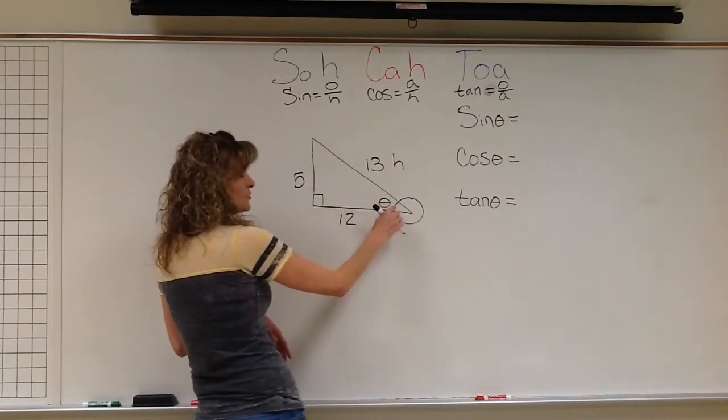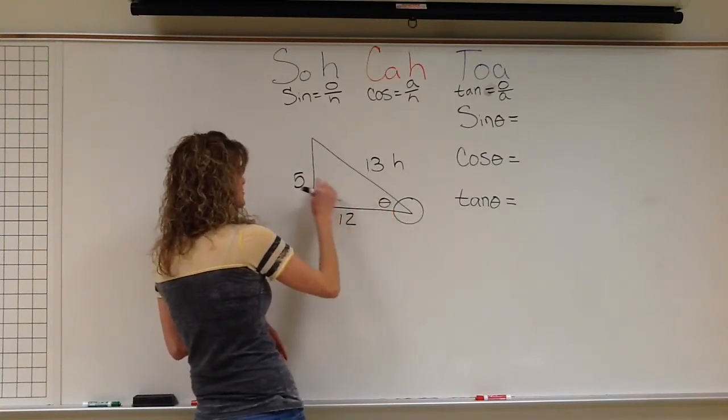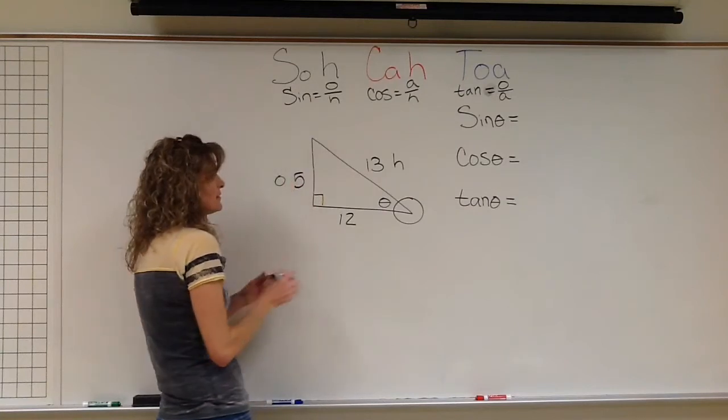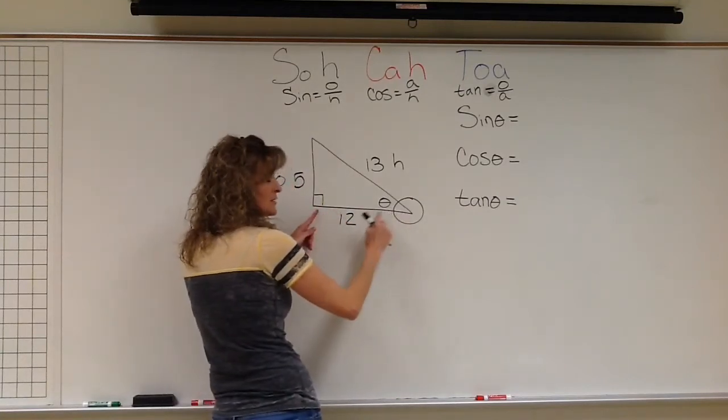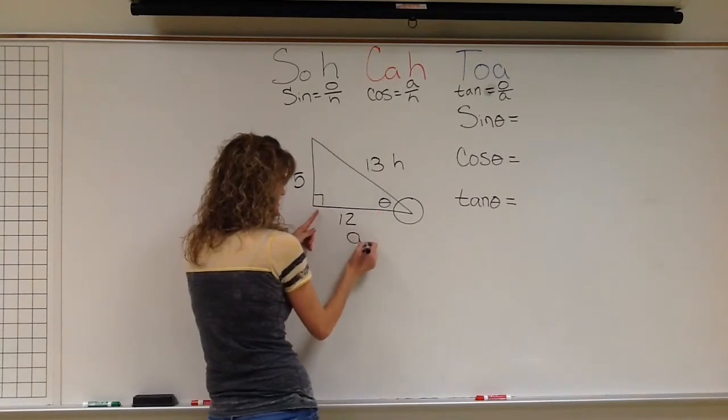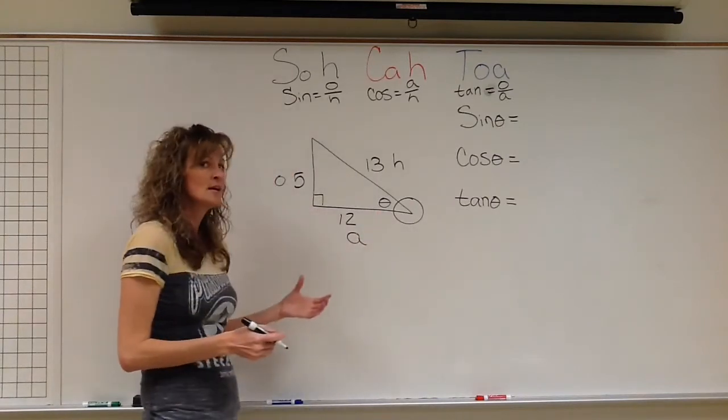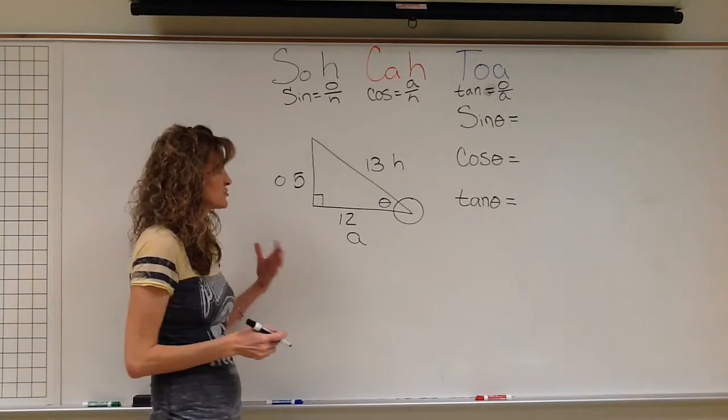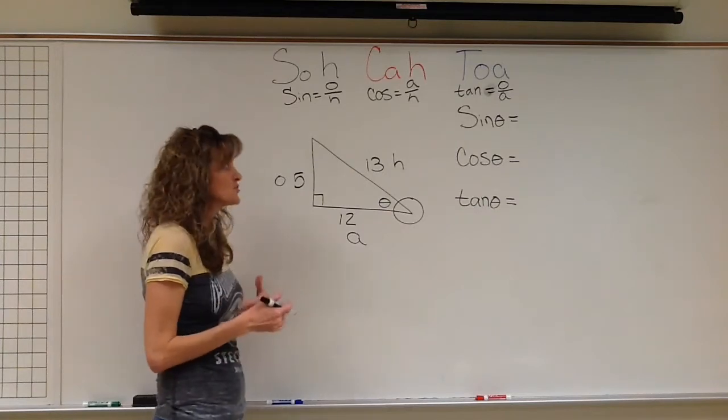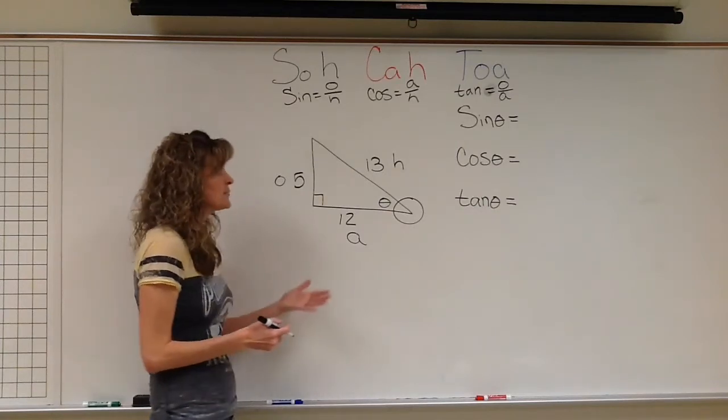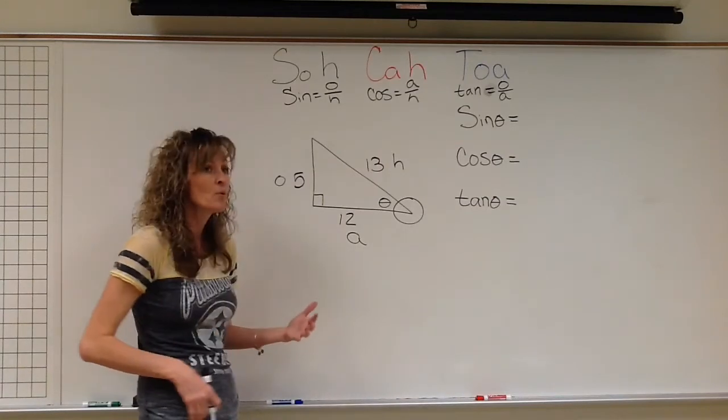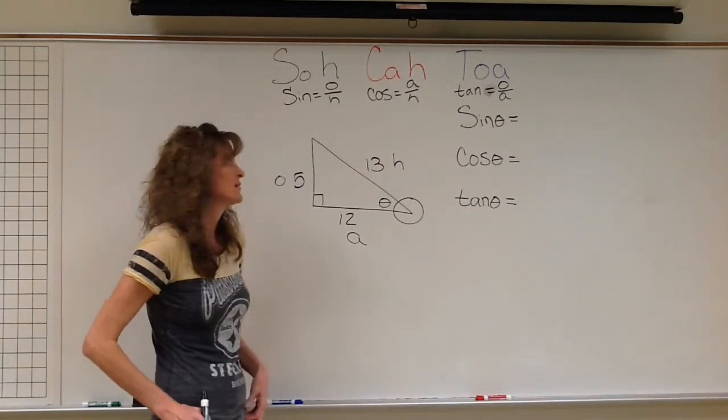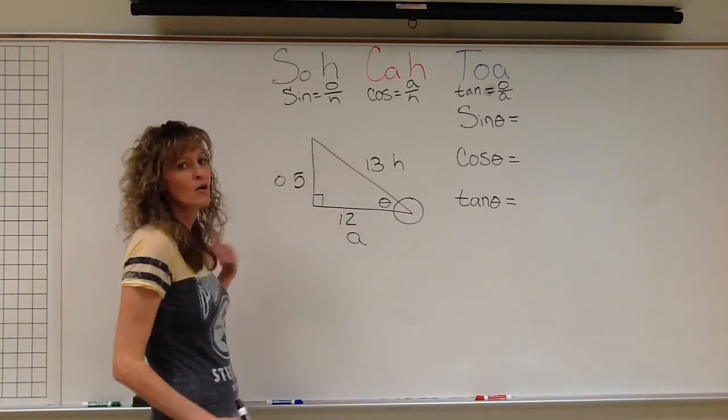Across from the angle that's in question is your opposite side. And then the side that adjoins to your angle, connects to your angle, that is the adjacent. So make sure that you can label those and get those correct. Also, make sure you're labeling them. If you skip that step, you're going to make a careless mistake somewhere at some point. And it's just not worth the careless mistake. It didn't take me that long to do this.